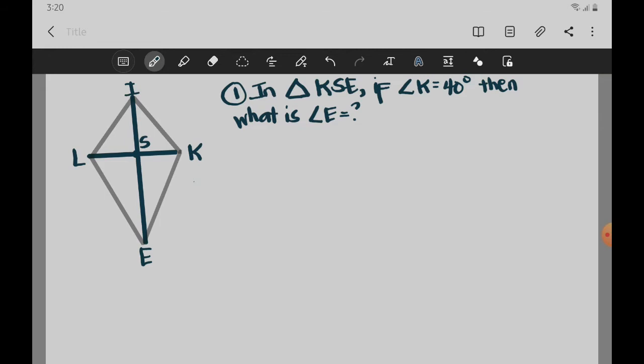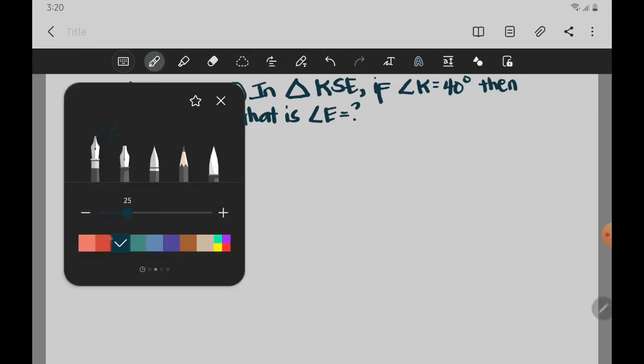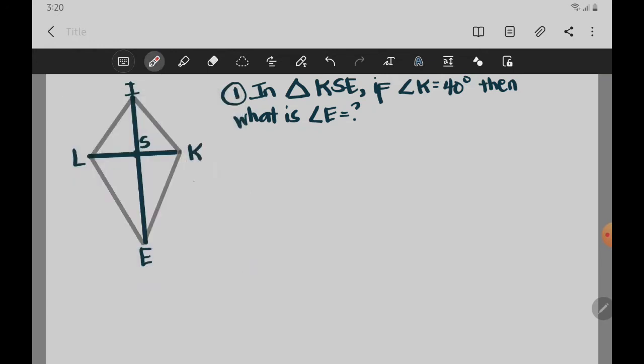So obviously, we have the given kite here, but we are just referring to triangle KSE. So we are just going to look at triangle KSE. From this triangle, the given is angle K, this one, measures 40 degrees.